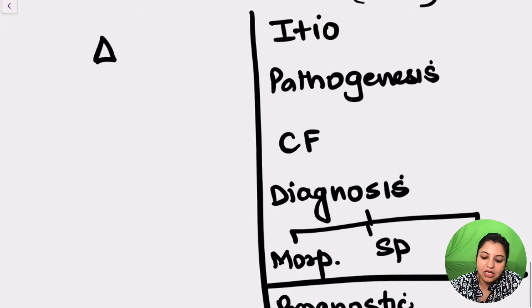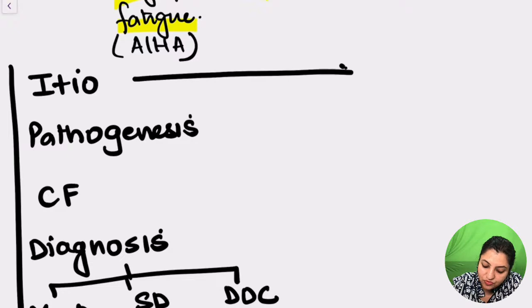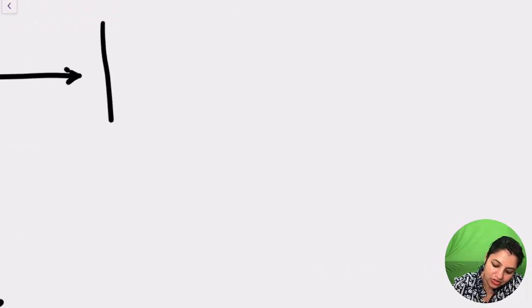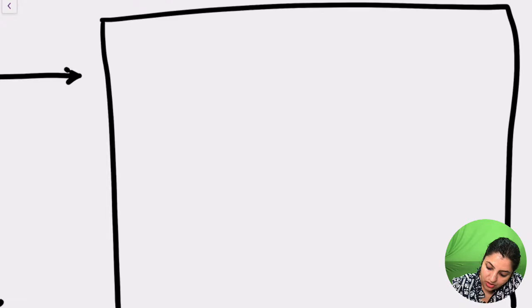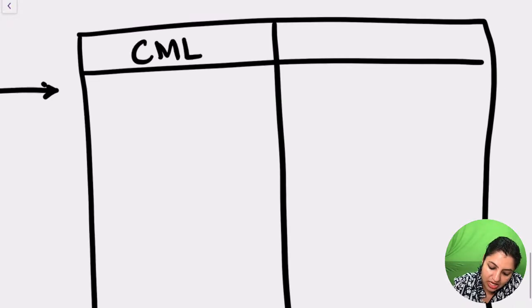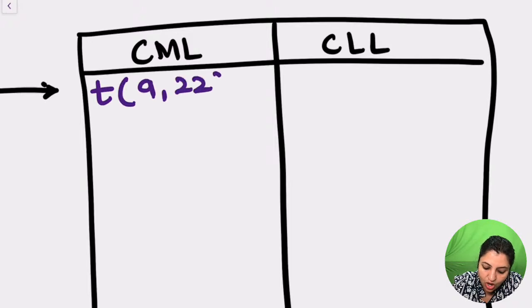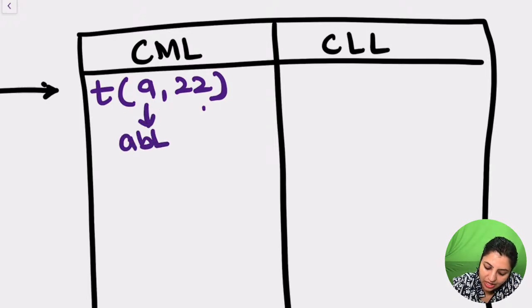Now let's look at etiology. We have two chronic leukemias: CML and CLL. CML occurs because of a reciprocal translocation between the long arm of chromosome 9 and the long arm of chromosome 22. On the long arm of chromosome 9 is the ABL gene, and on the long arm of chromosome 22 is the BCR gene. A helpful memory tip: P is the second alphabet, so BCR lies on chromosome 22.